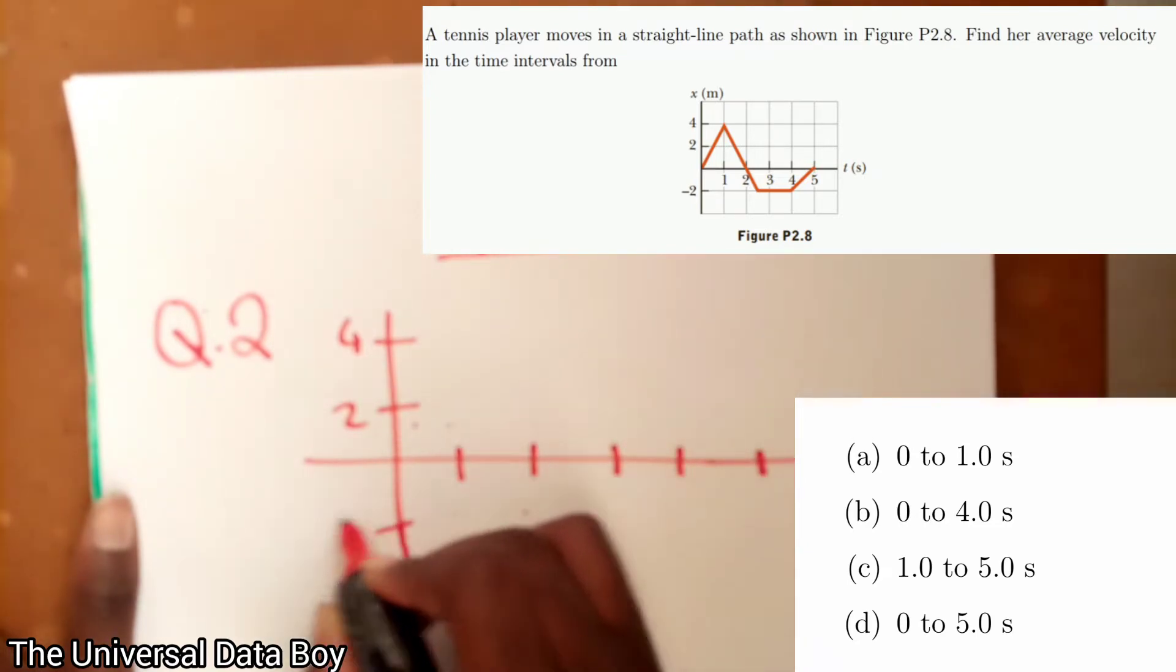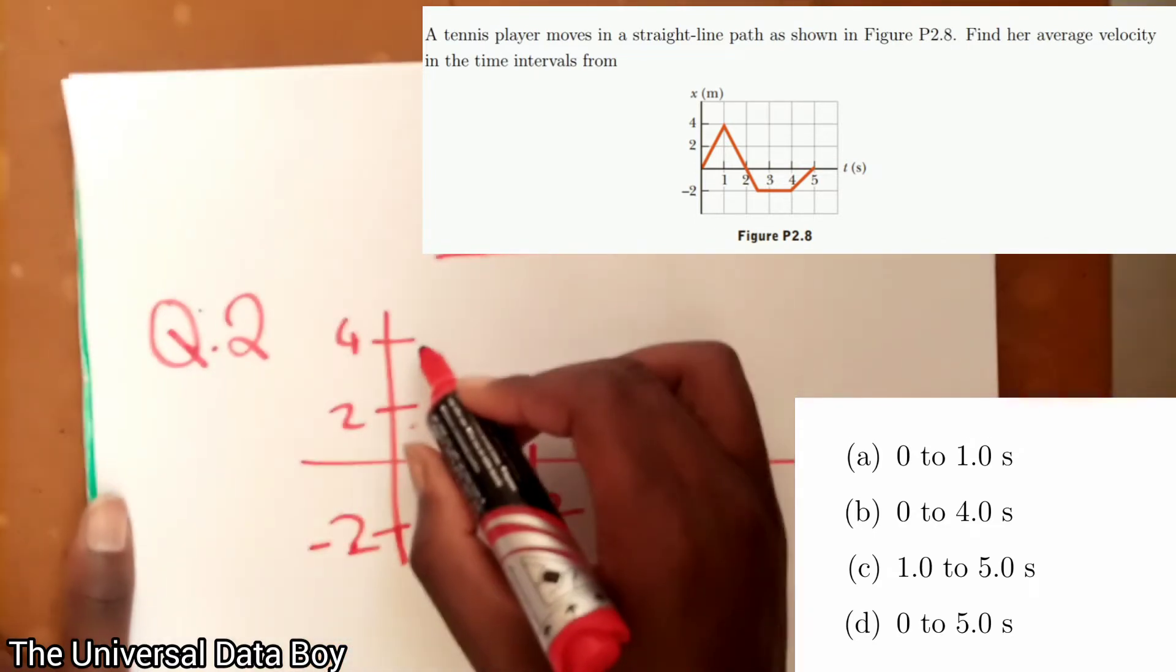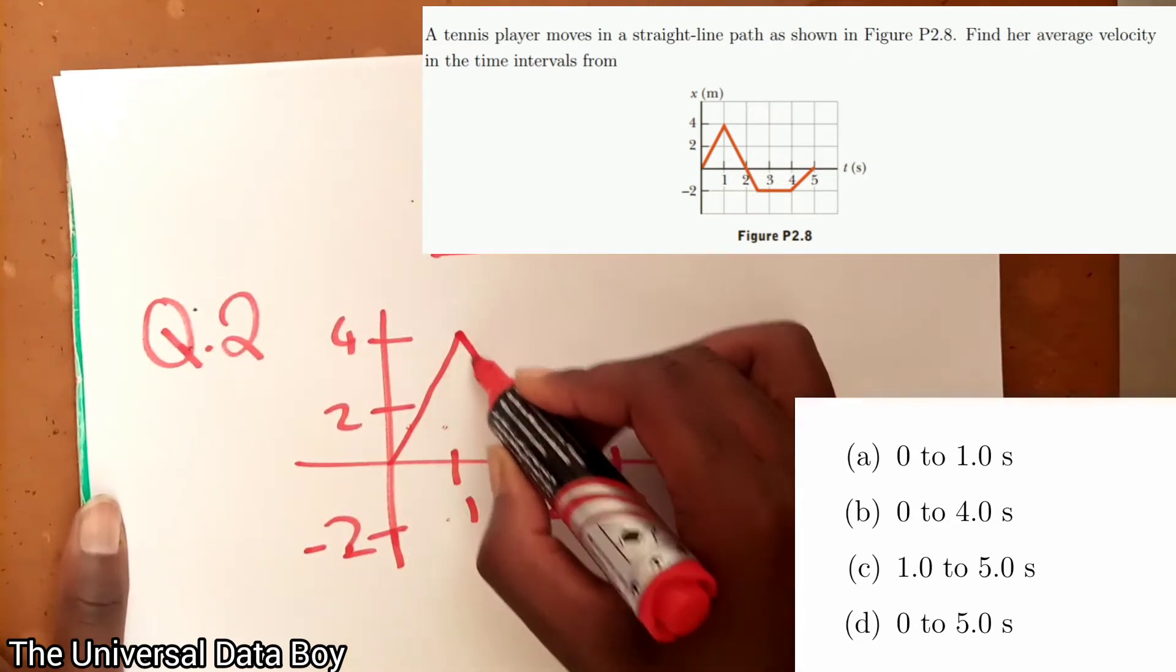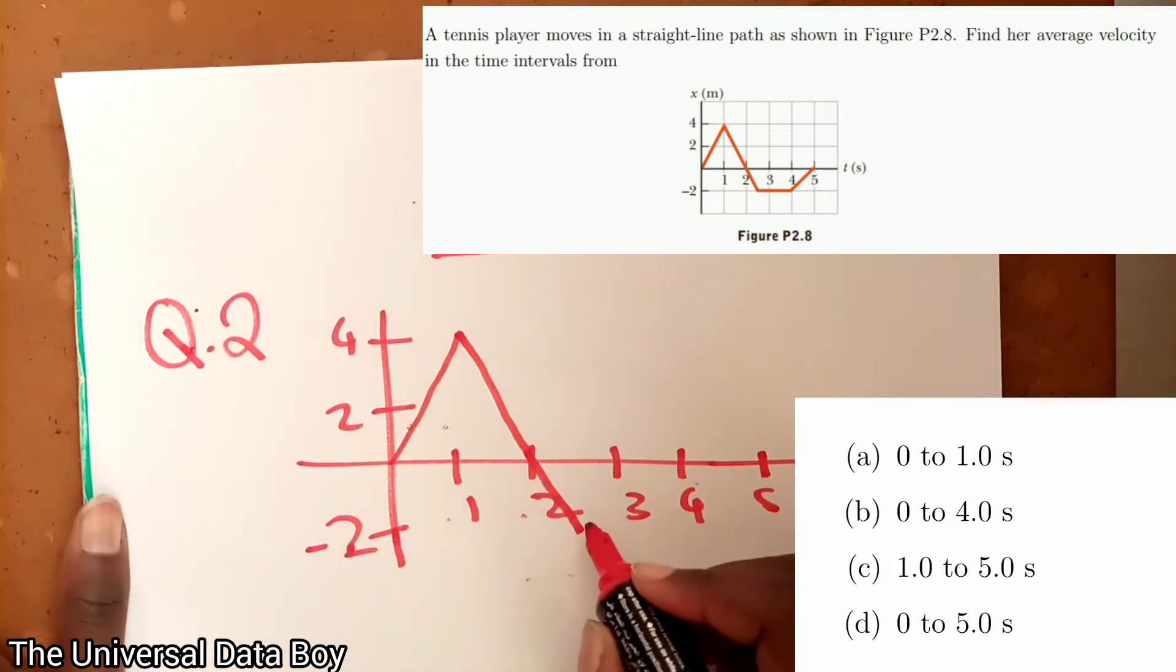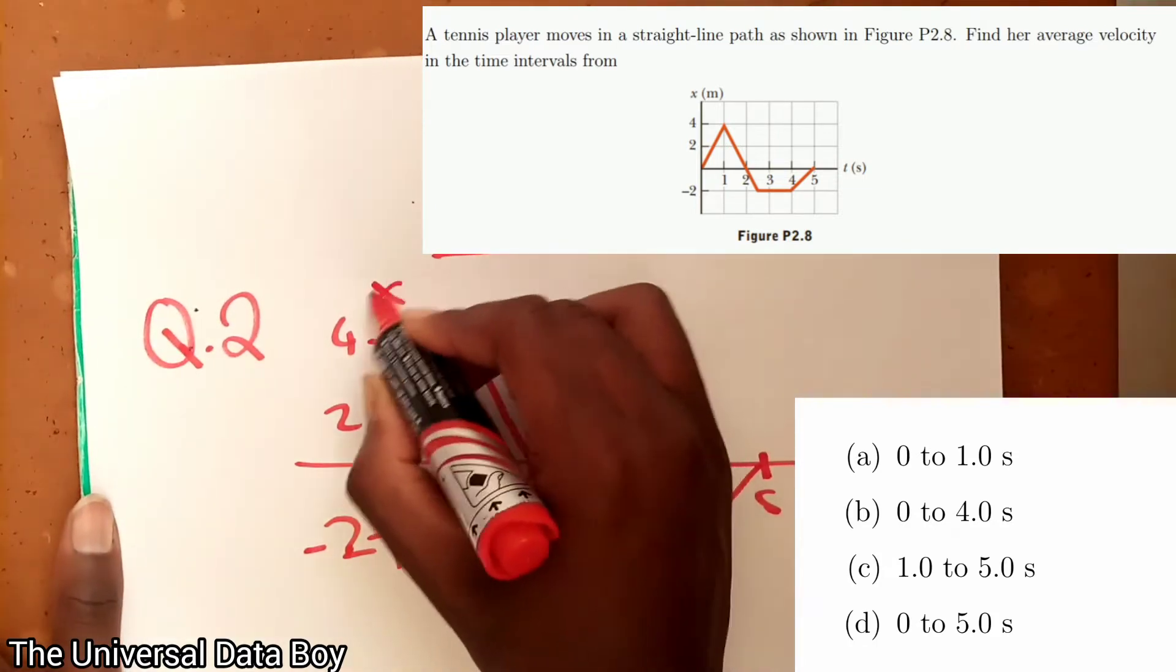Then we have got our negative 2, 1, 2, 3, 4, 5. Then I've got this curve moving to the 4, then it goes through 2, ends at negative 2, sorry, goes all the way up to 4, then ends at 5. So now this is the distance in meters